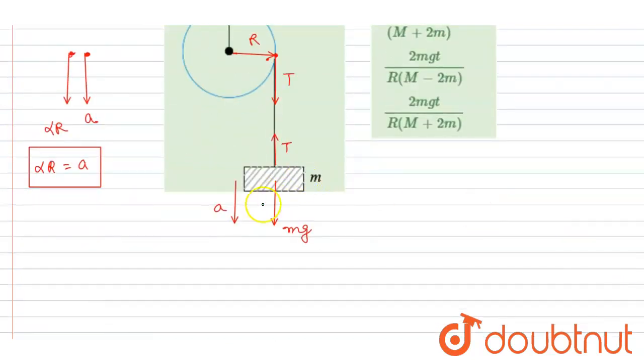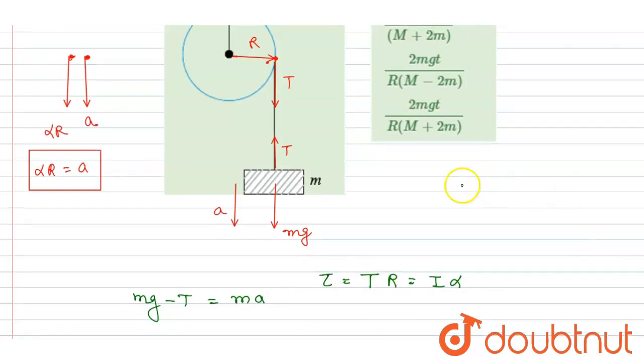Now I can write down the force and torque equation on the two. So Mg minus T is the net force on the block. So it equals Ma. And the torque because of T equals this. And it equals I alpha. This is torque because of the tension force.